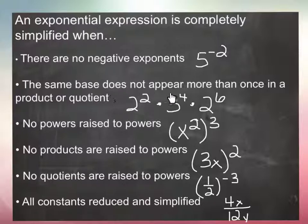The same base does not appear more than once in a product or quotient. That means that you can't have 2 to the squared and 2 to the 6 in your final answer. Since they're the same base, you can't combine them, so you still have one more step to complete.